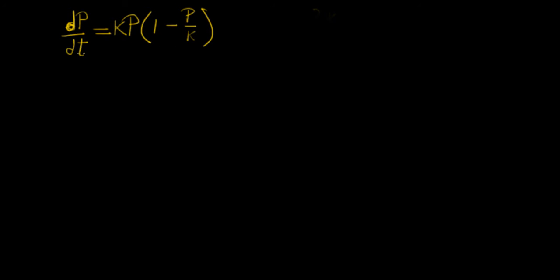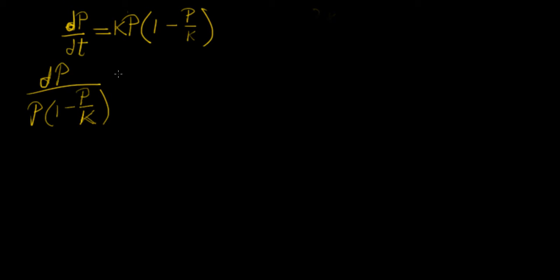How do we check whether this is separable or not? You can see that you can isolate the whole term and divide both sides such that all the p's are on the left-hand side with the differential element dp, and then have dt on the other side. So we're going to have dp over p(1 minus p/k), and we're going to integrate that with respect to p, equal to the integral of k with respect to dt.